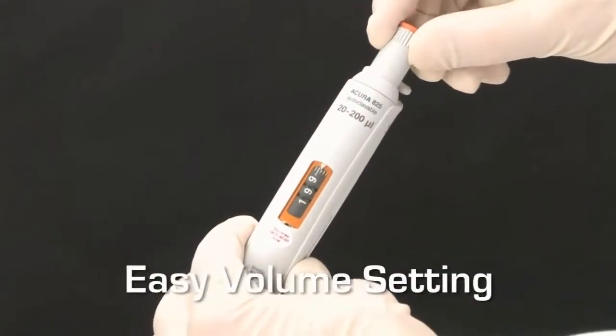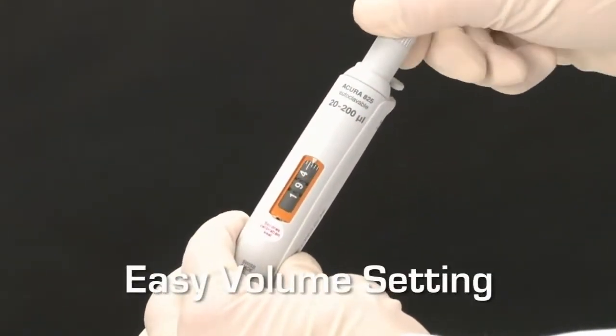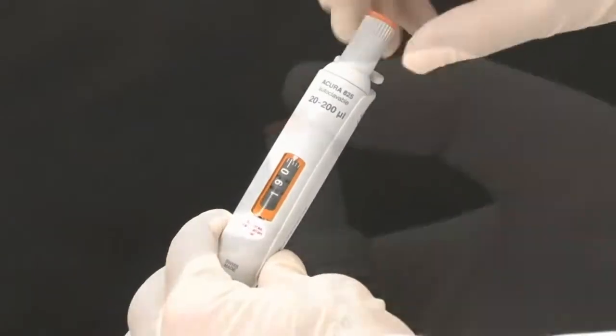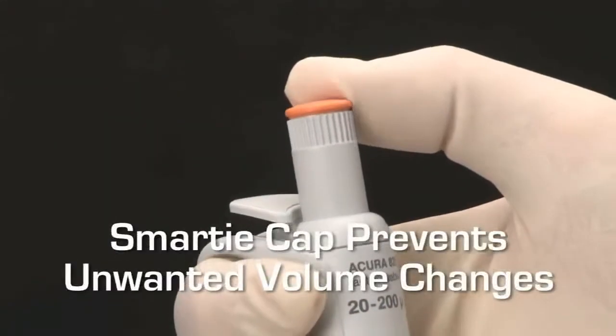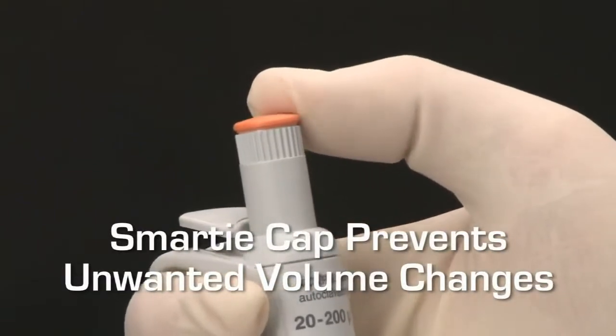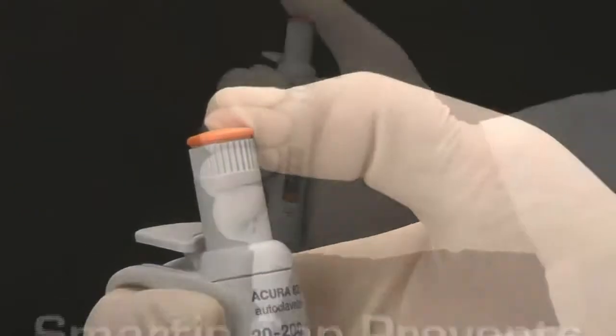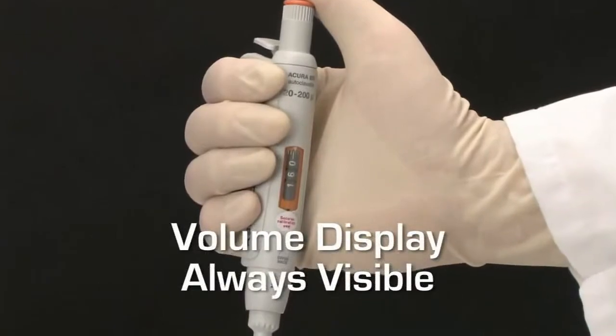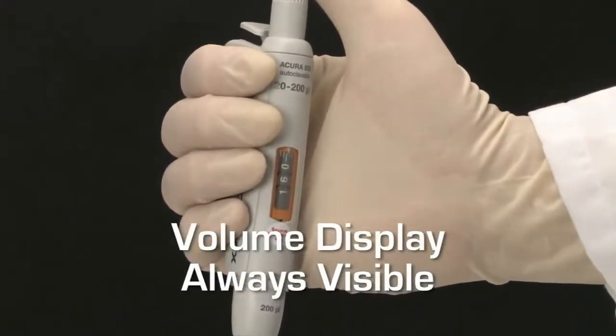Setting the exact volume to be dispensed with all Acura Manual Pipettes is simple and precise. Once selected, the free rotating color-coded cap prevents any unwanted volume changes from occurring during use. For positive verification, the contrasted volume display is visible anytime.